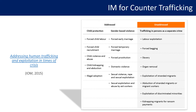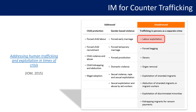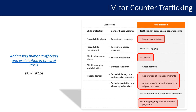Child protection and GBV tend to address forced child labour, forced early marriage, child violence and abuse, forced prostitution, and domestic violence. However, other issues such as labour exploitation, slavery, exploitation of stranded migrants, abduction of stranded migrants, and kidnapping for ransom — all areas where IOM is heavily involved — tend to be unaddressed. The purpose of introducing information management for counter-trafficking is to provide evidence to inform existing programs and help set up new ones that comprehensively address all these situations.